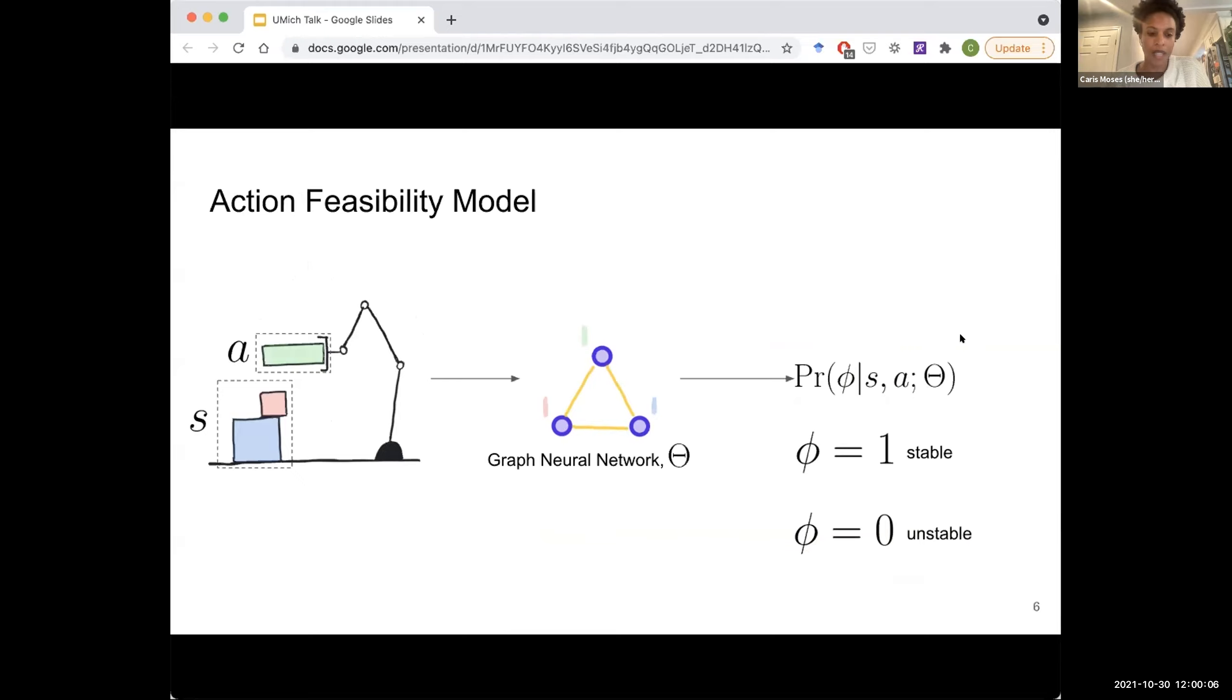And so we model this feasibility model. We call it an action feasibility model with the state, which is the blocks that the robot has placed so far, and the action, which is the block it's about to place. We use a graph neural network so that we can generalize to different tower sizes, which is pretty important in many tasks where the robot is expected to interact with a lot of objects. And finally, this model outputs a probability that this action is feasible, which in this task means will the tower be stable or not?